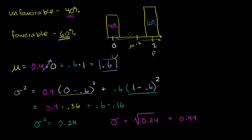I did this example with particular numbers to show you why this distribution is useful. In the next video, I'll use general numbers where p is the probability of success and 1 minus p is the probability of failure. We'll come up with general formulas for the mean, variance, and standard deviation of this distribution, which is actually called the Bernoulli distribution — the simplest case of the binomial distribution.